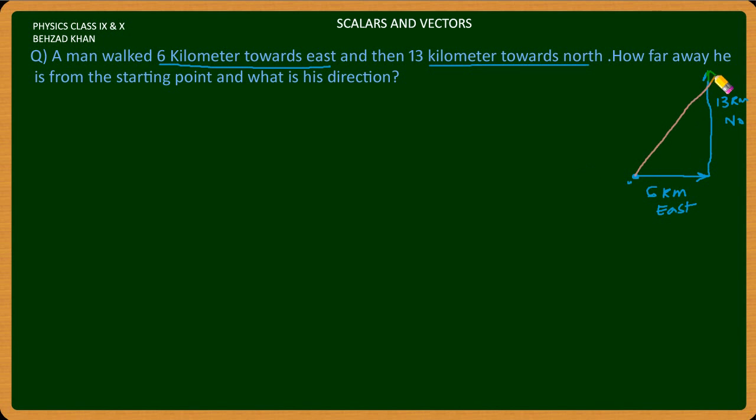You have to know that d1 is 6 km and d2 is 13 km. d3 is already known from the Pythagoras theorem.